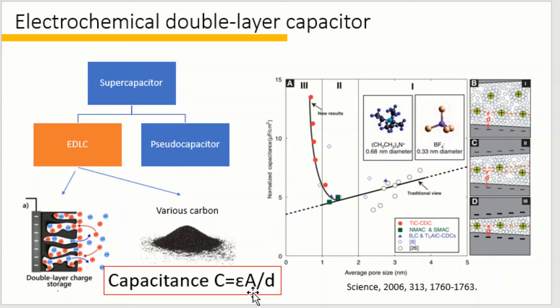For now the surface area of activated carbon can be as high as 4000 square meters per gram. However, there is a limitation of the surface area and still the energy storage capability of a supercapacitor is far lower than battery. Then how can we improve the capacitance?